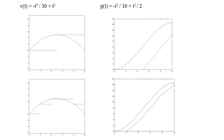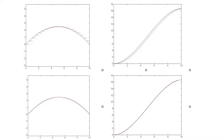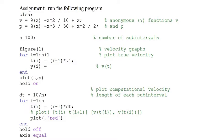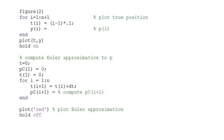Since our example differential equation has an analytic solution, we can graph the true value of the position function corresponding to the differential equation. These graphs show the true velocity and position functions in black, and the Euler estimated velocity and position functions in red. They show how the Euler estimates improve as the subinterval size decreases.